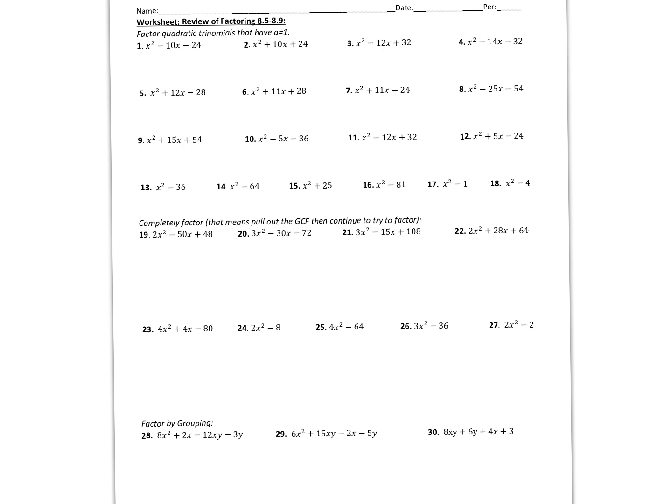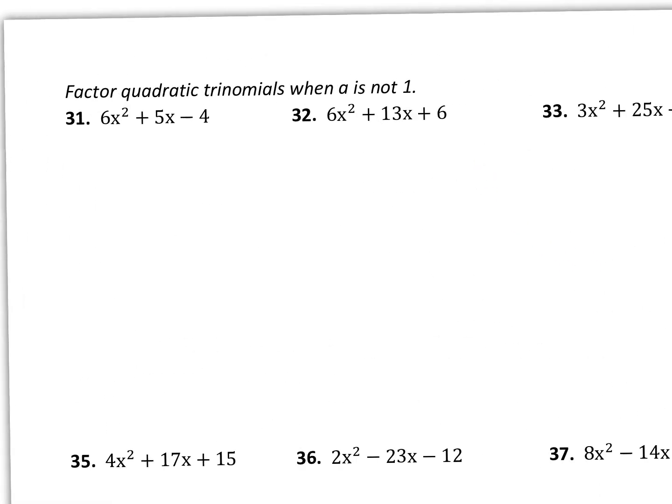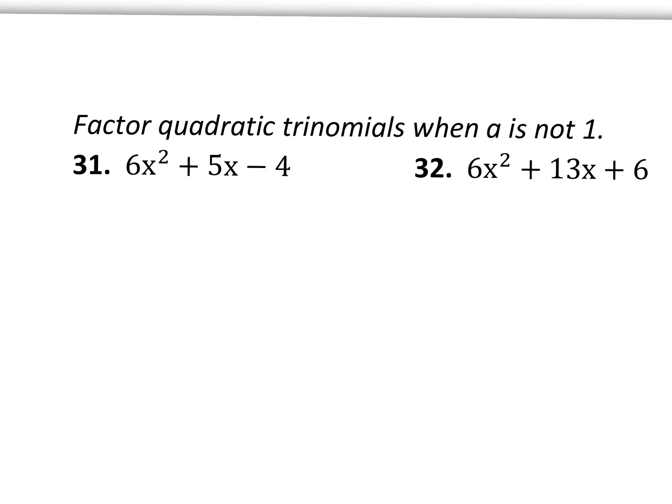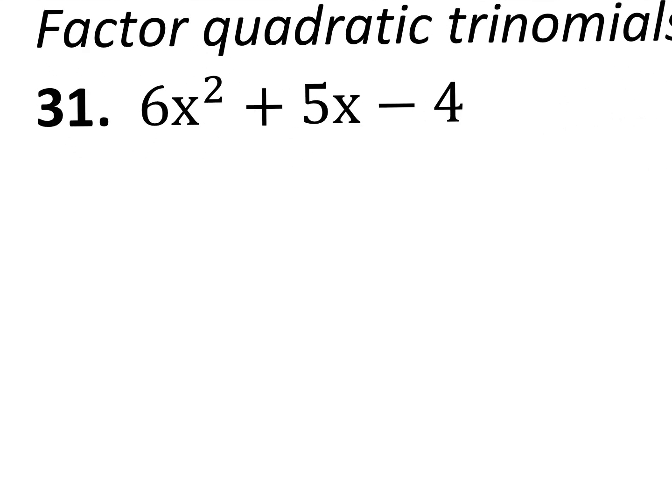All the solutions are posted on Google Classroom, and I also have a video explaining some of these questions. Let's go to the back side. On the back side, we're going to practice factoring quadratic trinomials when A is not 1. So let's take a look at number 31 right here. The A value is 6, not 1. So we're going to do that multi-step process.